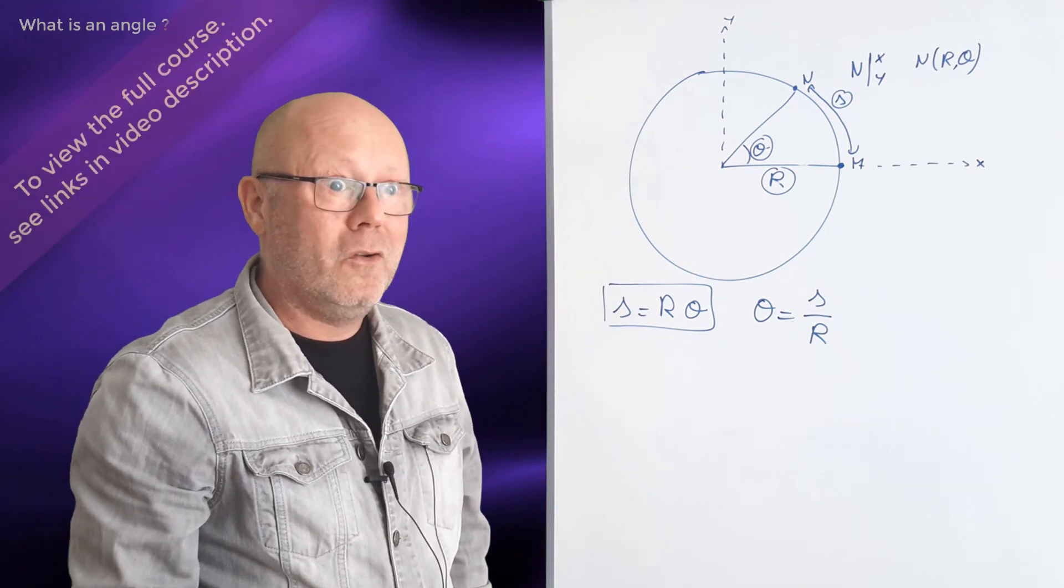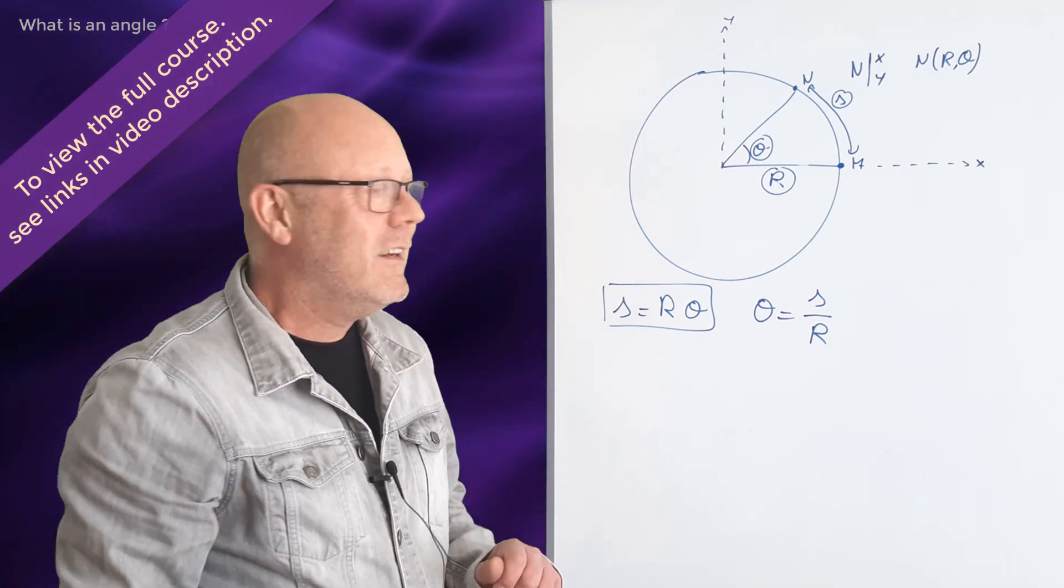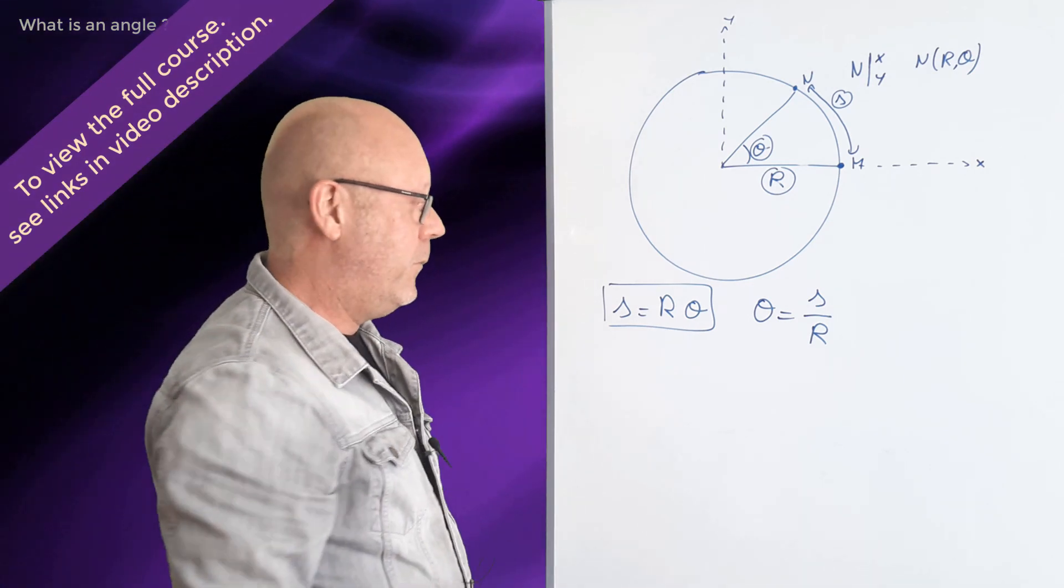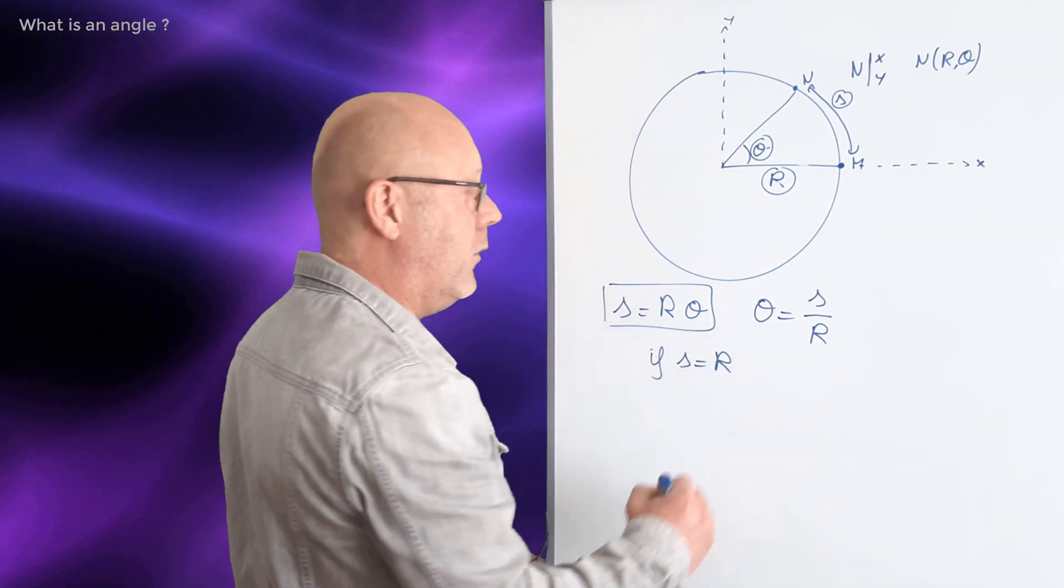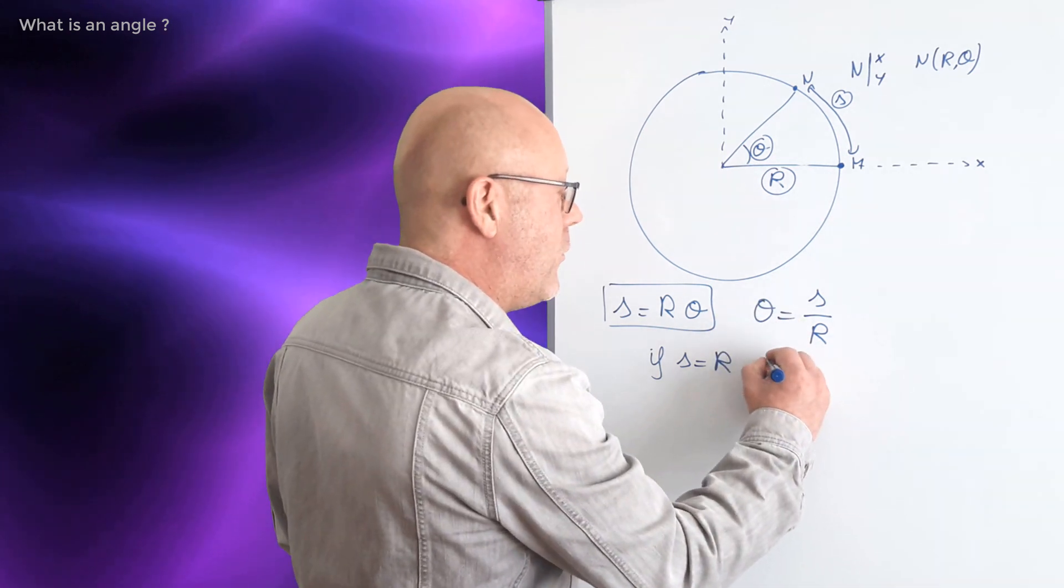So we humans, we need units, we need to cling on something. So we can define a unit. If the arc has the same length as the radius, then you can see that theta equals one.